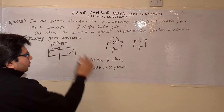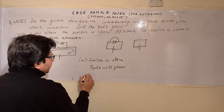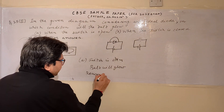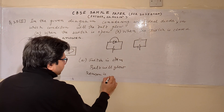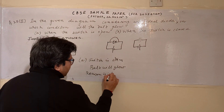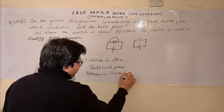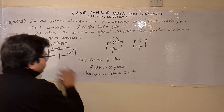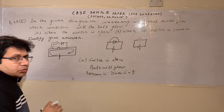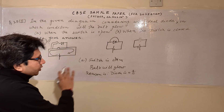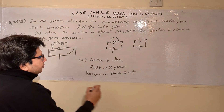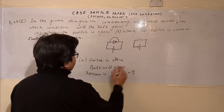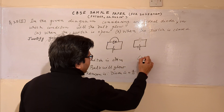So we can say the bulb will glow. The reason is: the diode is off, and the current goes through the bulb. This is the justification for part A — the bulb will glow.